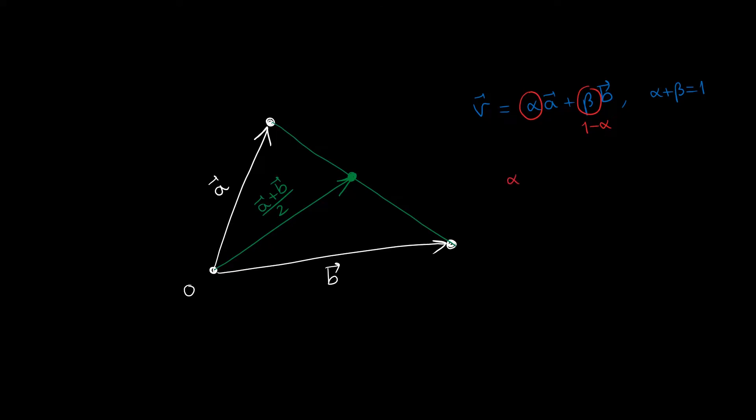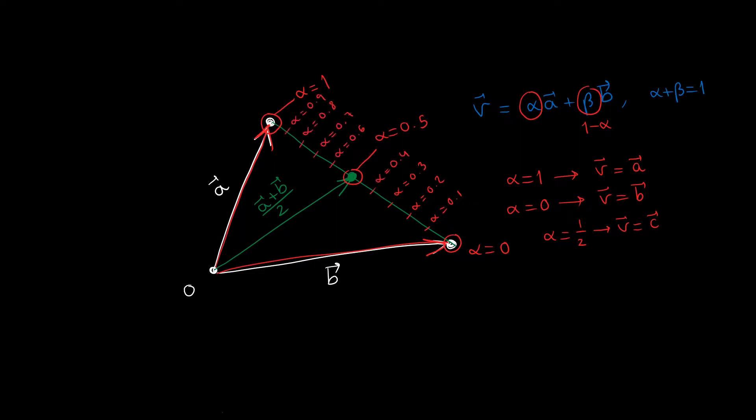Notice that if alpha equals 1 then we get vector a. If alpha equals 0 then we get vector b. If alpha equals 1 half then we get the midpoint vector c. In fact, any value of alpha will give us a different point along the line joining the two points.